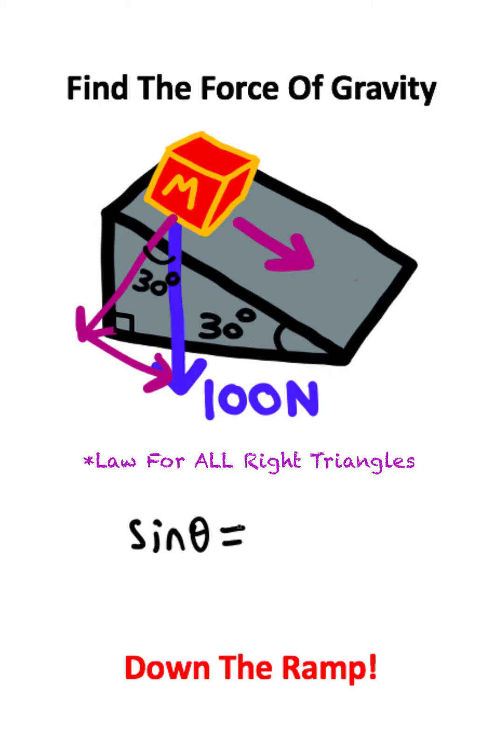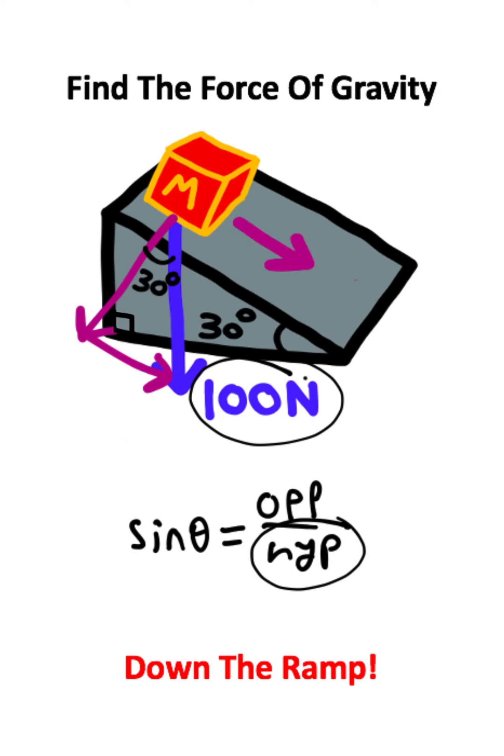There is a rule in trigonometry that tells us that the sine of our angle is equal to opposite over hypotenuse. The hypotenuse is the long side of the triangle, which is this 100 Newtons.